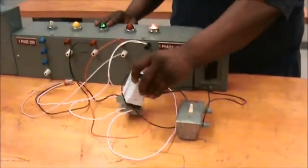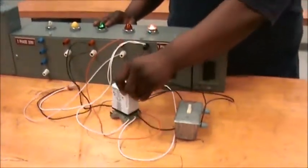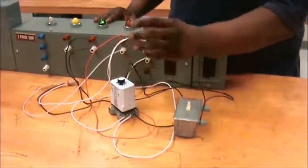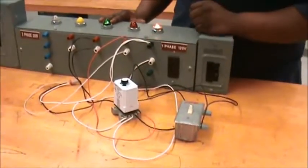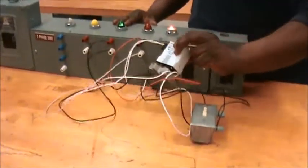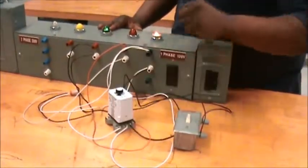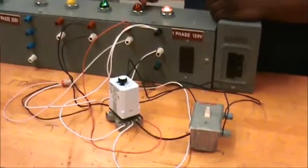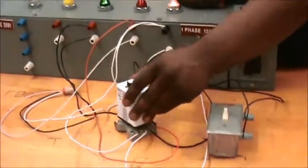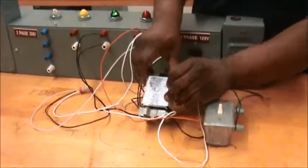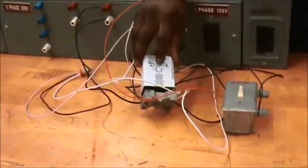One other thing about the off-delay timer is that the off-delay timer has to be wired hot all the time. If you do not wire the off-delay timer hot all the time, then you'll never have the power to make the contacts change their state. The off-delay timer actually contains a contact.